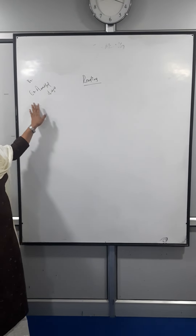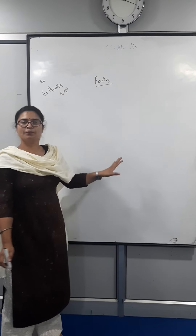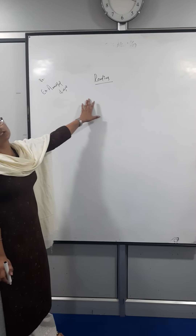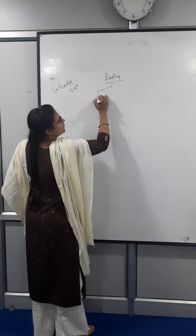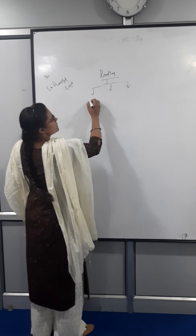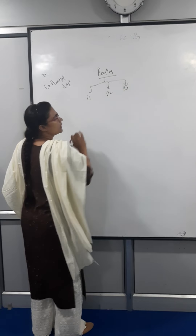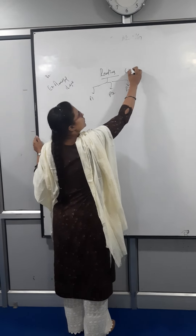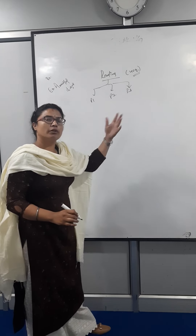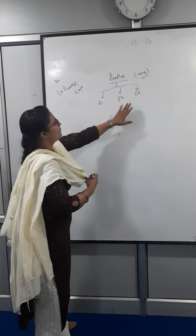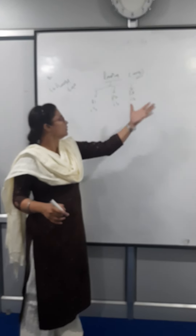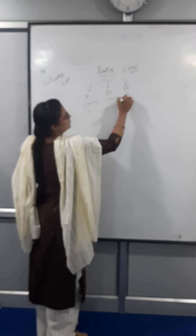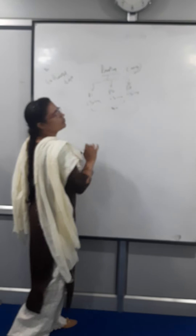Today we are going to cover all about reading. This is a Bitmark call, so let's talk about the IELTS reading video. Basically, in reading there are 3 passages — Passage 1, Passage 2, and Passage 3 — and in total there are 40 questions out of which you will be marked. Every passage has a minimum of 13 questions, but one of the passages will have 14, making it 40 in all.